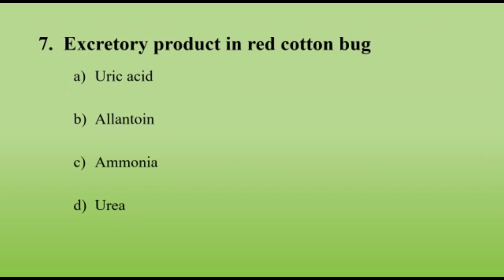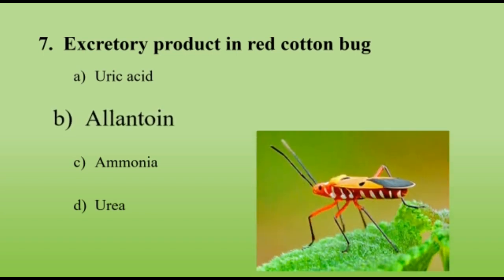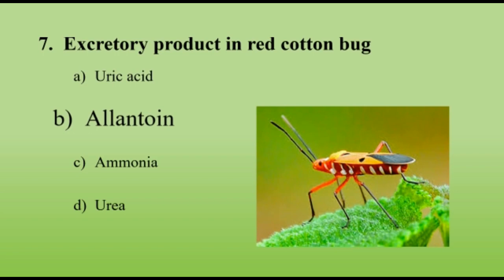The excretory product of red cotton bug is allantoin. In case of red cotton bug, uric acid is stored in the body wall, giving rise to white streaks on the abdomen, and that product is allantoin.